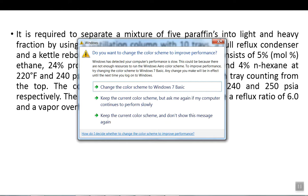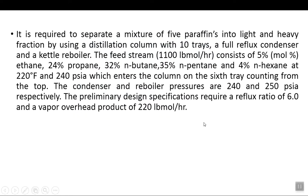The distillation column has 10 trays with a full reflux condenser and a catalytic reboiler. The feed stream consists of a flow rate of 1100 pound-mole per hour, which consists of 5 mole percent ethane, 24% propane, 32% n-butane, 35% n-pentane, and 4% n-hexane at 220 degrees Fahrenheit and 240 psi. This feed enters the column on the sixth tray counting from the top. The condenser and reboiler pressures are 240 and 250 psi respectively.